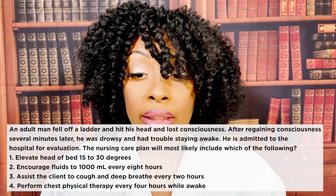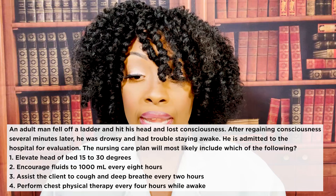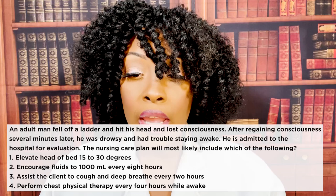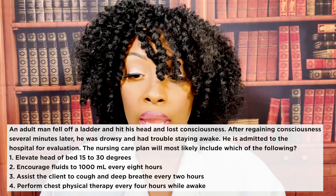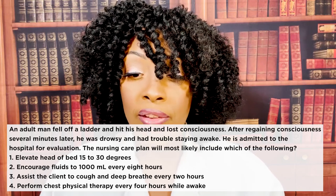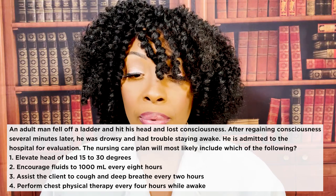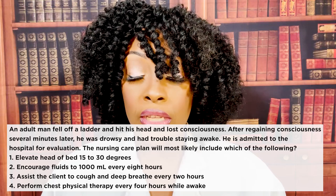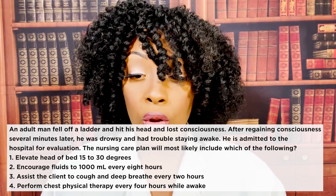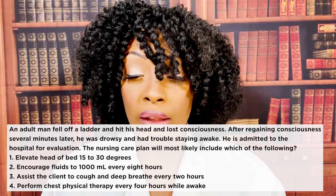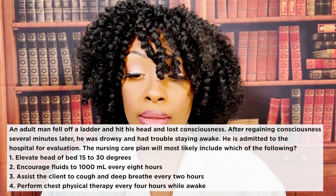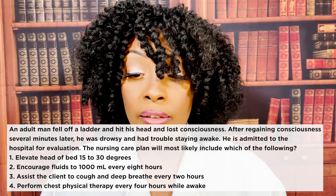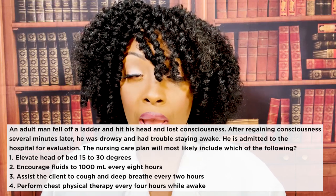First question. An adult man fell off of a ladder and hit his head and lost consciousness. After regaining consciousness several minutes later, he was drowsy and had trouble staying awake. He's admitted to the hospital for evaluation. The nursing care plan will most likely include which of the following? One, elevate head of bed 15 to 30 degrees. Two, encourage fluids to 1,000 milliliters every eight hours. Three, assist the client to cough and deep breathe every two hours. Four, perform chest physical therapy every four hours while awake.